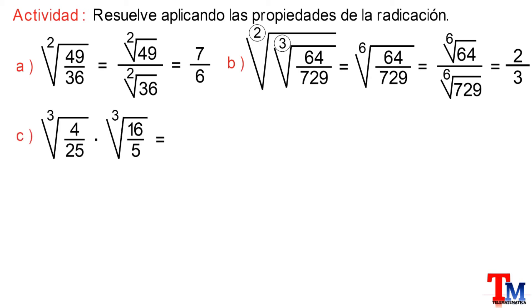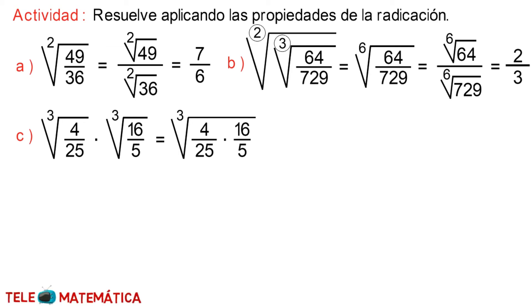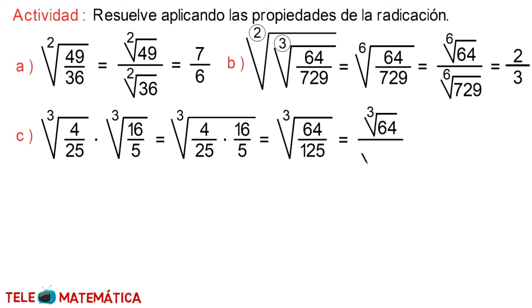Literal C: cube root of 4/25 multiplied by the cube root of 16/5. Here we apply the property of multiplication of roots with equal indices. This gives us the cube root of (4/25 × 16/5). Since there is no simplification, we multiply the numerators and denominators, giving us the cube root of 64/125. Now, applying the nth root of a rational number, we get the cube root of 64 divided by the cube root of 125. Calculating both roots, the final result is 4/5.